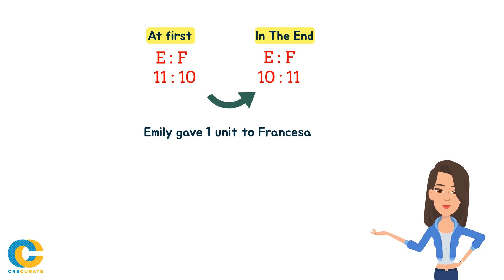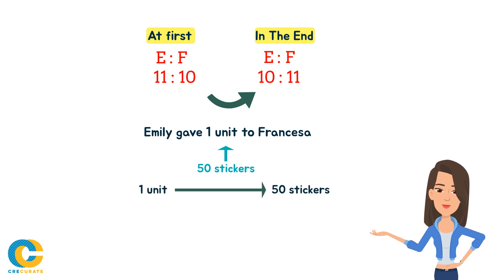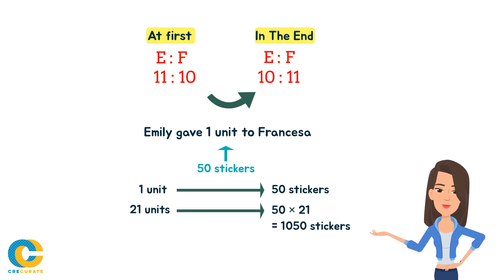Since we know that Emily gave 50 stickers to Francesca, this means that one unit is 50 stickers. To find the total number of stickers both girls have, we simply multiply 50 by 21 units to get 1050 stickers.